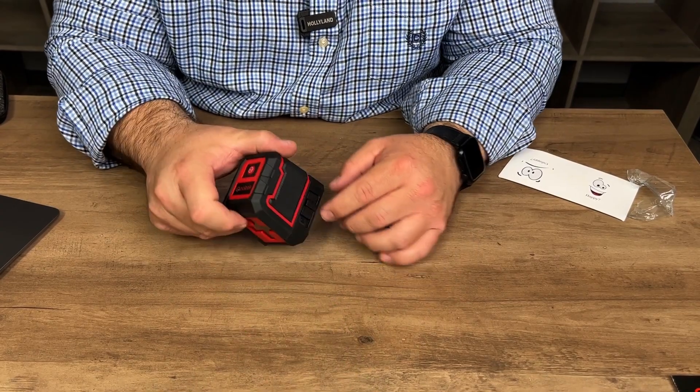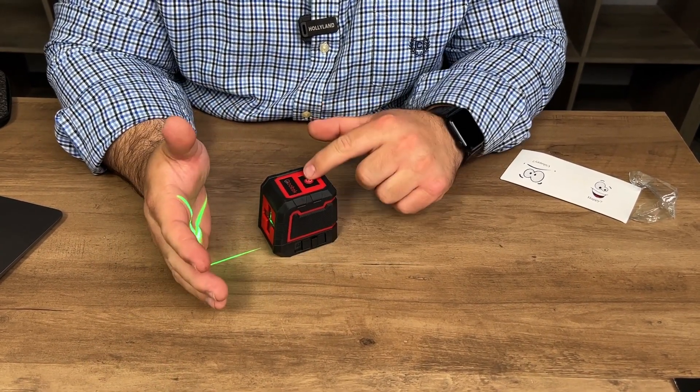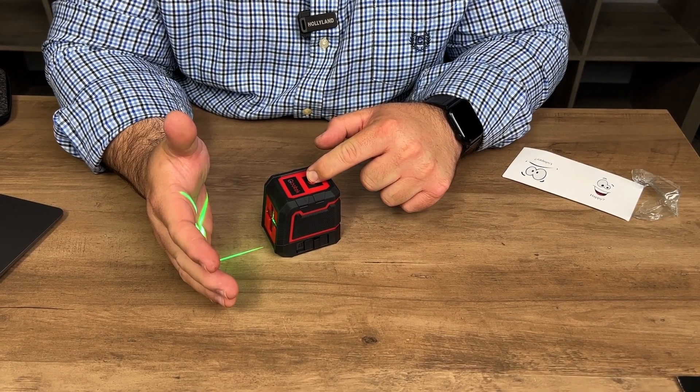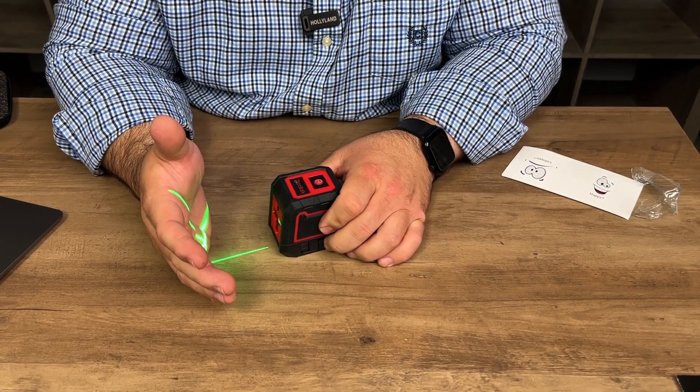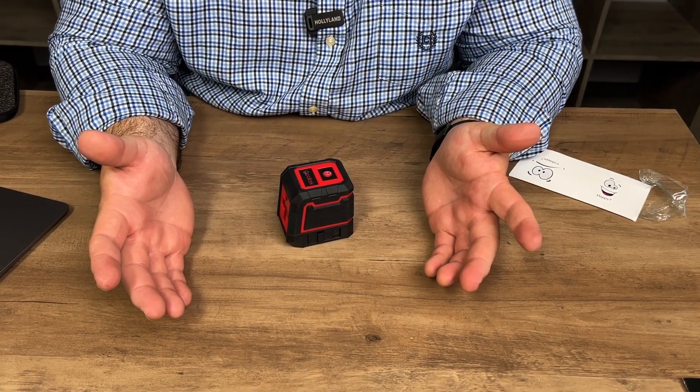Speaking of the power button, when you're on the self-leveling mode here, the power button does not actually turn it off. Just holding it down just changes the brightness. It doesn't actually turn the laser off. So slide this forward and then the laser will go off automatically.